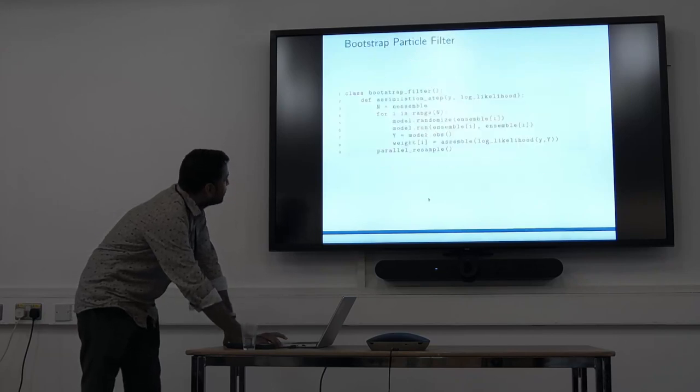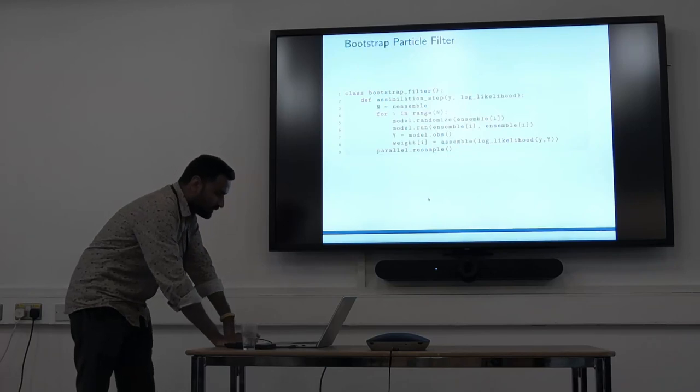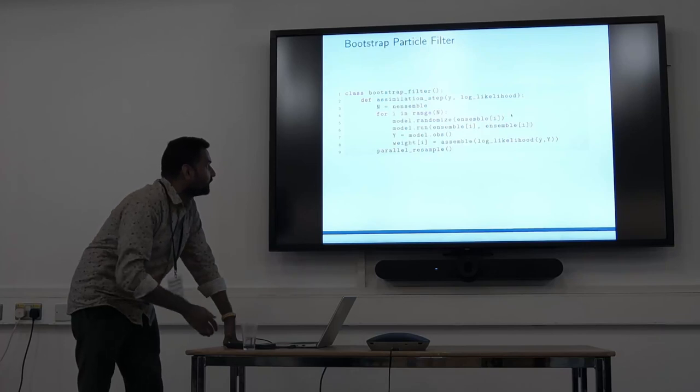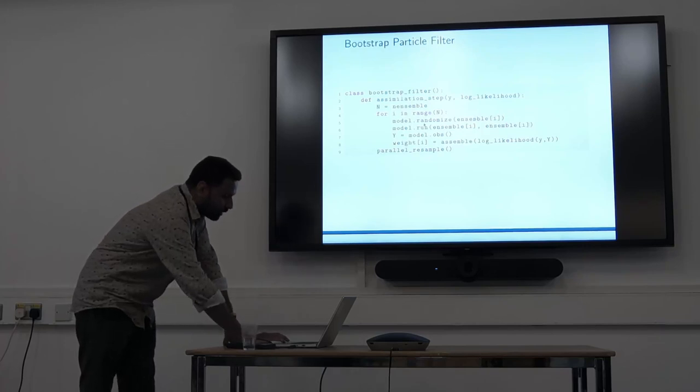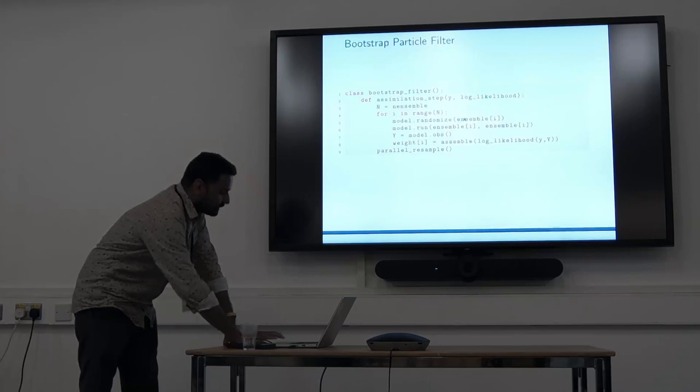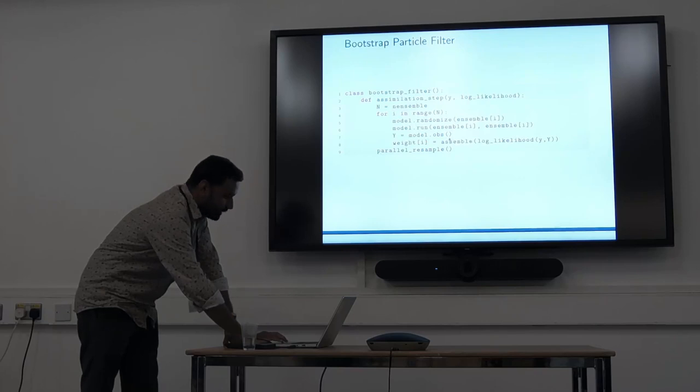I'll just show my code instead of writing the algorithm. Here n is total number of ensembles. The ensemble is a list where the first entry is state space, then we can add noise and parameters if needed. We randomize by adding noise, then we can run the model forward. This is the array of ensembles, then we calculate the weight.